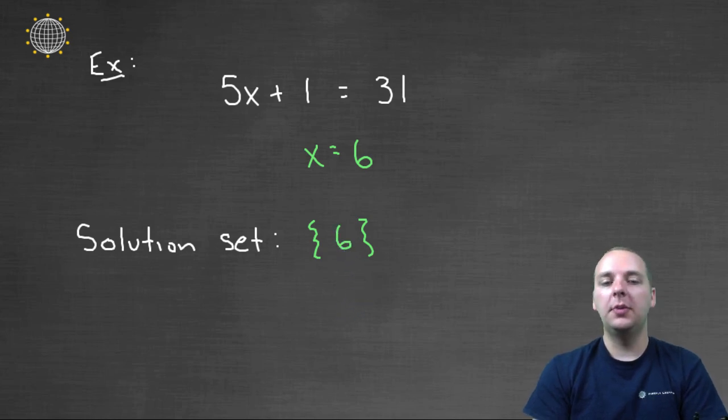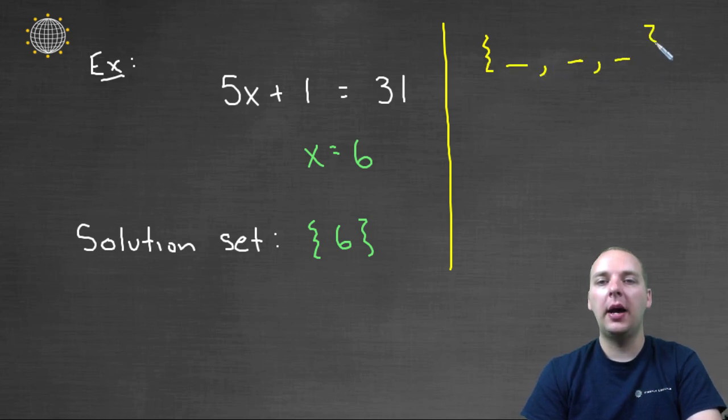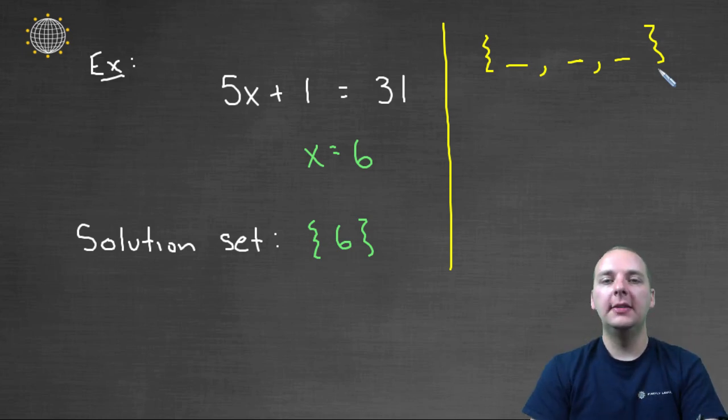Now if you had another example, which I'm not going to do one like this in this video, but let's say you had an example where you had 3 solutions, or 4 solutions, or a lot of solutions. Then you would just put curly braces, and then you would put your values, and then you would simply separate them by a comma. You put all those values inside curly braces, and you just separate your different solutions by commas.